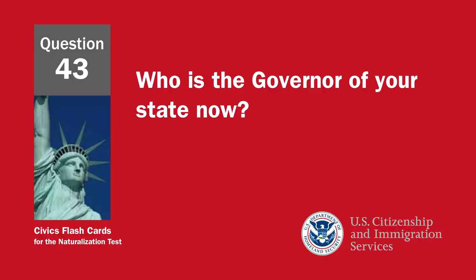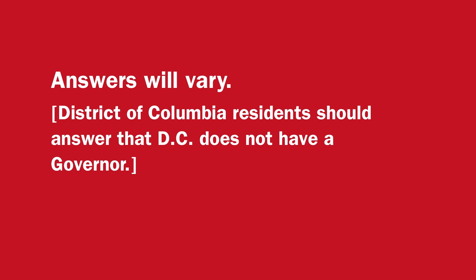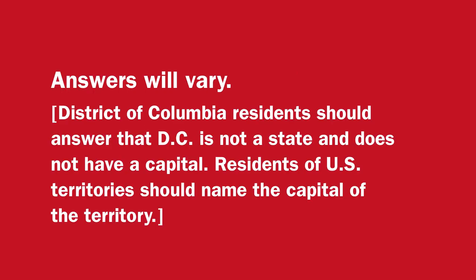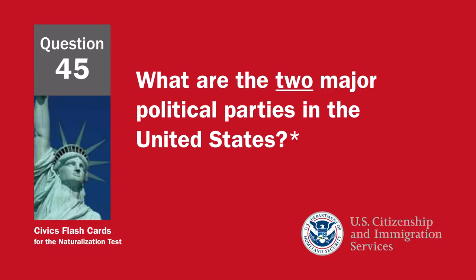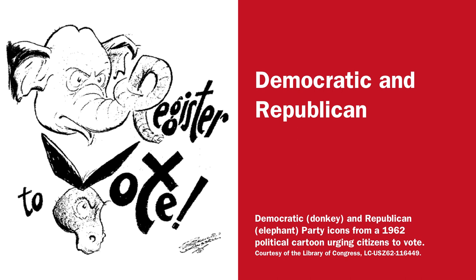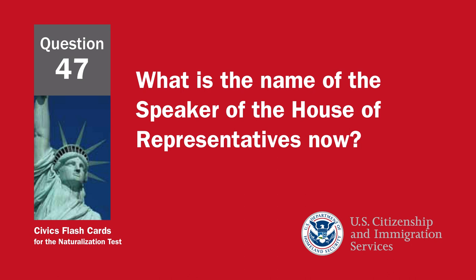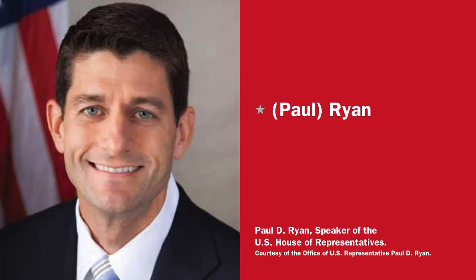Who is the governor of your state now? Answers will vary. District of Columbia residents should answer that D.C. does not have a governor. What is the capital of your state? Answers will vary. D.C. is not a state and does not have a capital. What are the two major political parties in the United States? Democratic and Republican. What is the political party of the president now? Republican Party. What is the name of the speaker of the House of Representatives now? Paul Ryan.